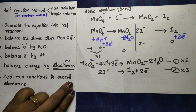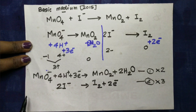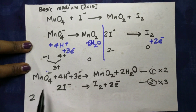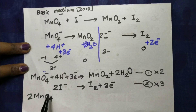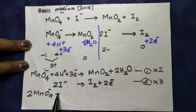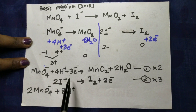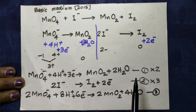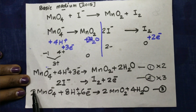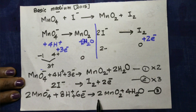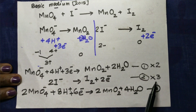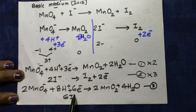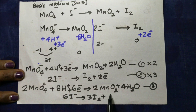Now we will take the next step. After multiplying: 2 times here gives 4, 4, 6, 5. We will add the two sides together: add 2 and add 2, then add 3. 6I⁻ gives 3I₂ plus 6 electrons.